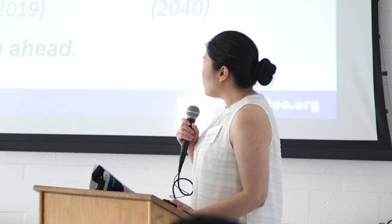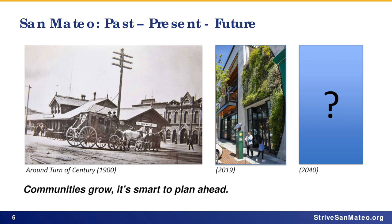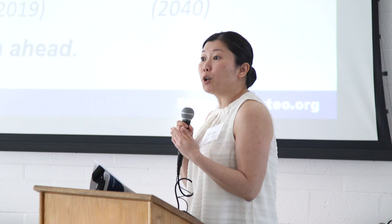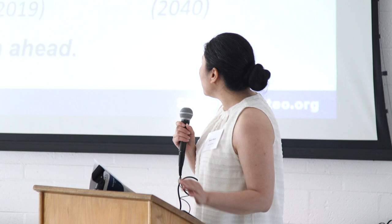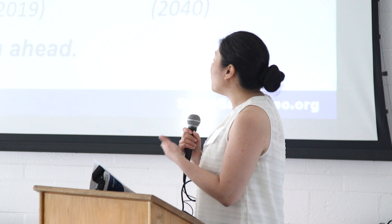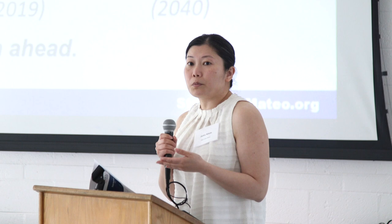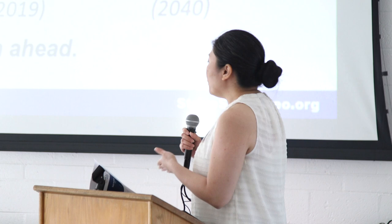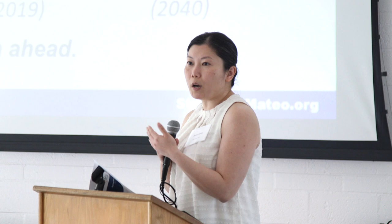Some of you may have seen these photos before — turn of the century, this is downtown San Mateo at the railroad station. The next photo is 2019: an adaptive reuse of the old Baywood Theater building from the 1930s. Buildings in downtown are being repurposed for different uses, yet they remain part of the heart of San Mateo. As we think about the future and plan ahead, your input today helps us imagine and plan that next step.